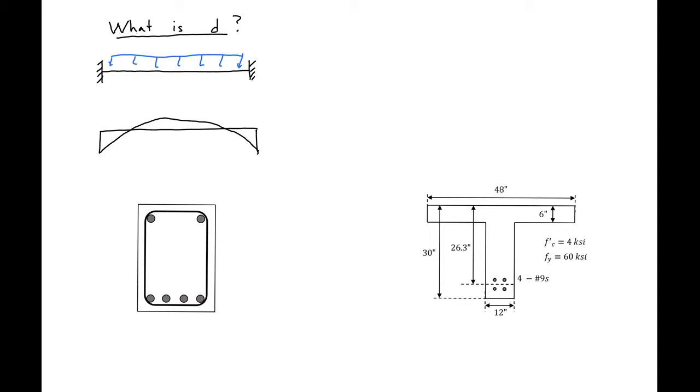If we look at our negative moment region, our top steel is in tension. In our negative moment region, our D is the distance from our compression face, which is on the bottom in this case, to the centroid of our tension steel. So this would be our D in section 1.